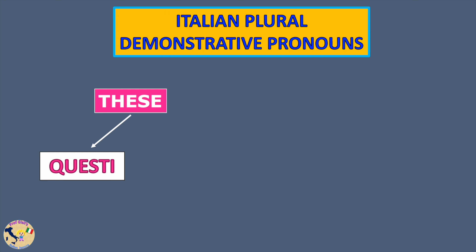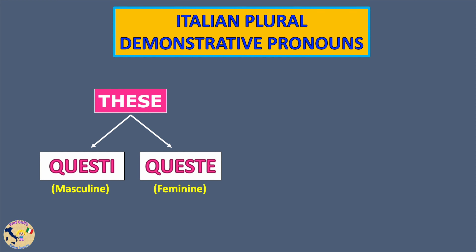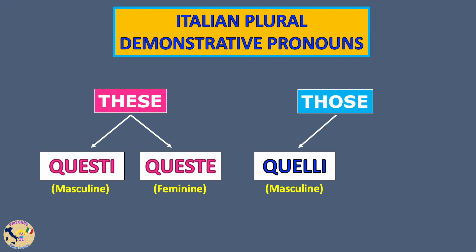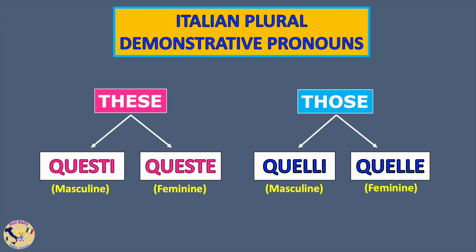In Italian, we have two plural demonstrative pronouns equivalent to English pronoun 'these': questi for the masculine and queste for the feminine. And there are two plural demonstrative pronouns equivalent to English pronoun 'those': quelli for the masculine and quelle for the feminine.